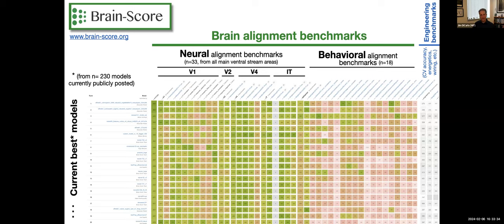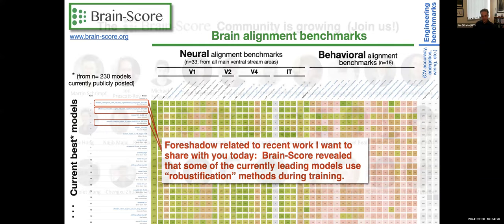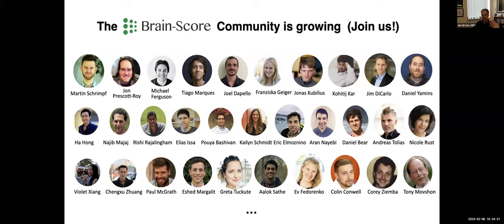We now take these models as a class that we keep working in — finding better and better models within this large family of deep convolutional neural networks to find the ones that best align with the biology we're measuring. We make comparisons at different levels: IT should match IT, V4 should match V4, V2 should match V2. We keep track of this as a community on a platform called BrainScore — a collection of all the scores I'm describing. For those interested in these models, I encourage you to go to the BrainScore website. This is being expanded beyond just vision. BrainScore allows us as a community to start to converge around shared sets of alignment benchmarks, both neural and behavioral, across the ventral stream.